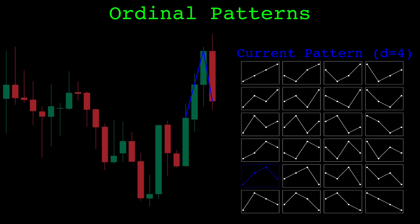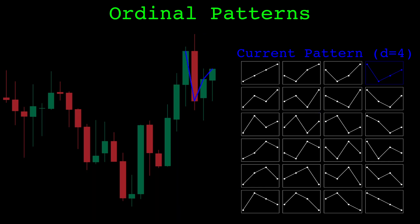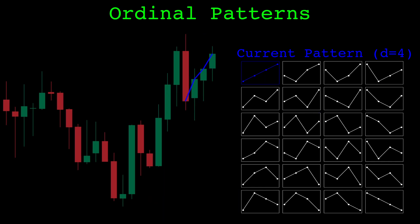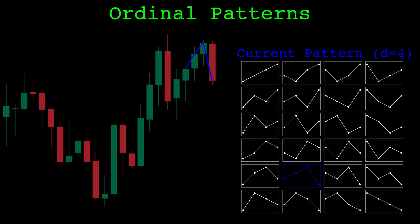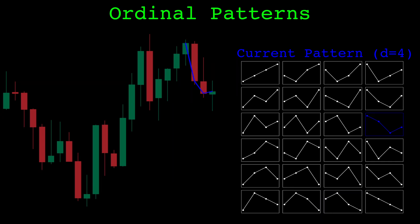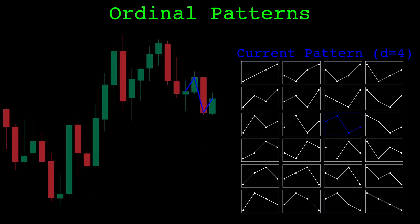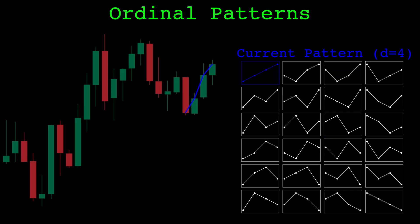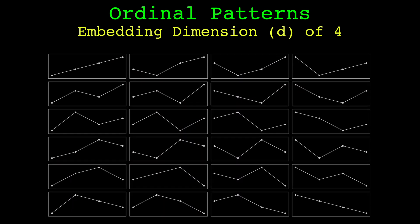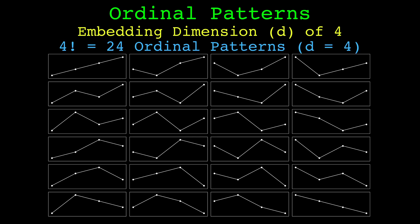Permutation entropy is a very common use of ordinal patterns, but I want to be clear that ordinal patterns are useful for much more. I've used them in many of my own trading systems and experiments in a variety of different ways. Let's look at how ordinal patterns are built. What we just saw were 24 ordinal patterns looking at the last four closing prices. The number of data points to consider is called the embedding dimension.